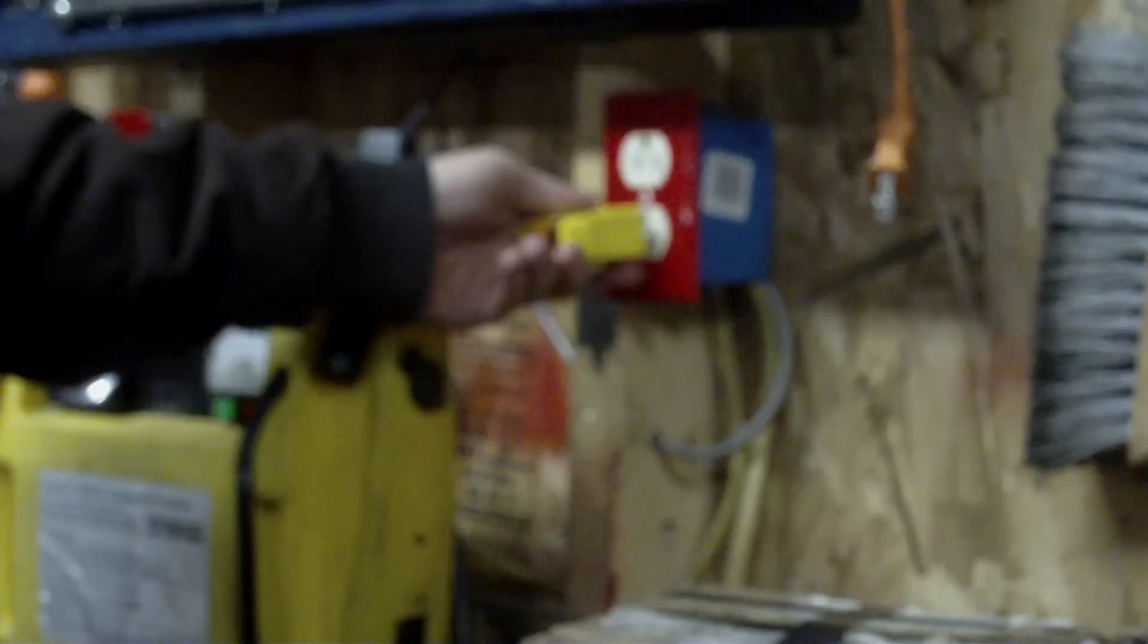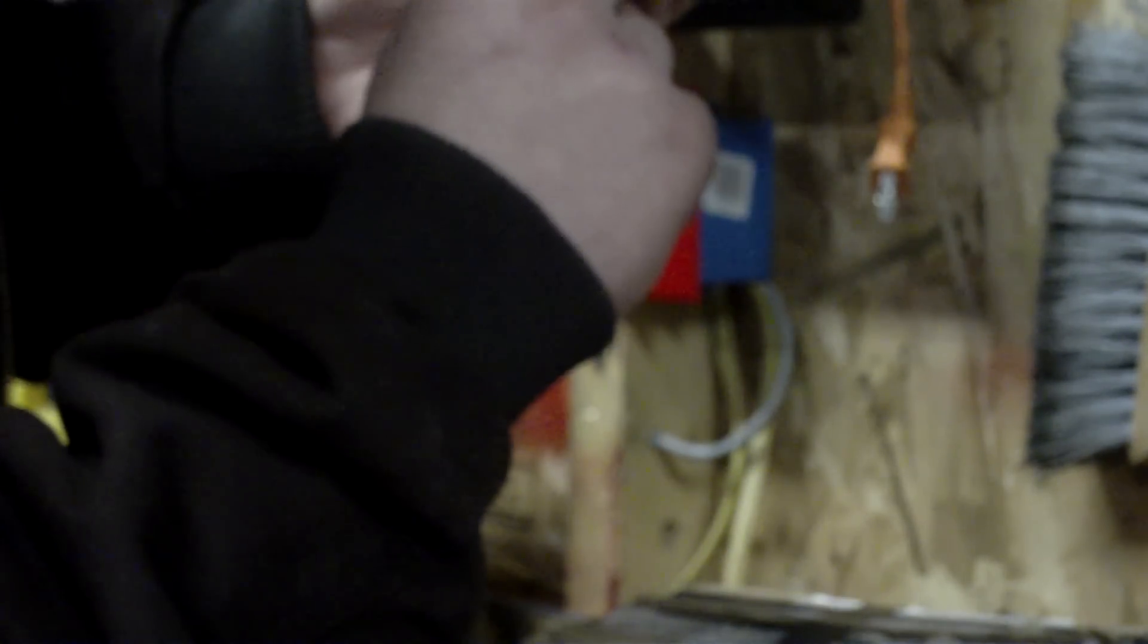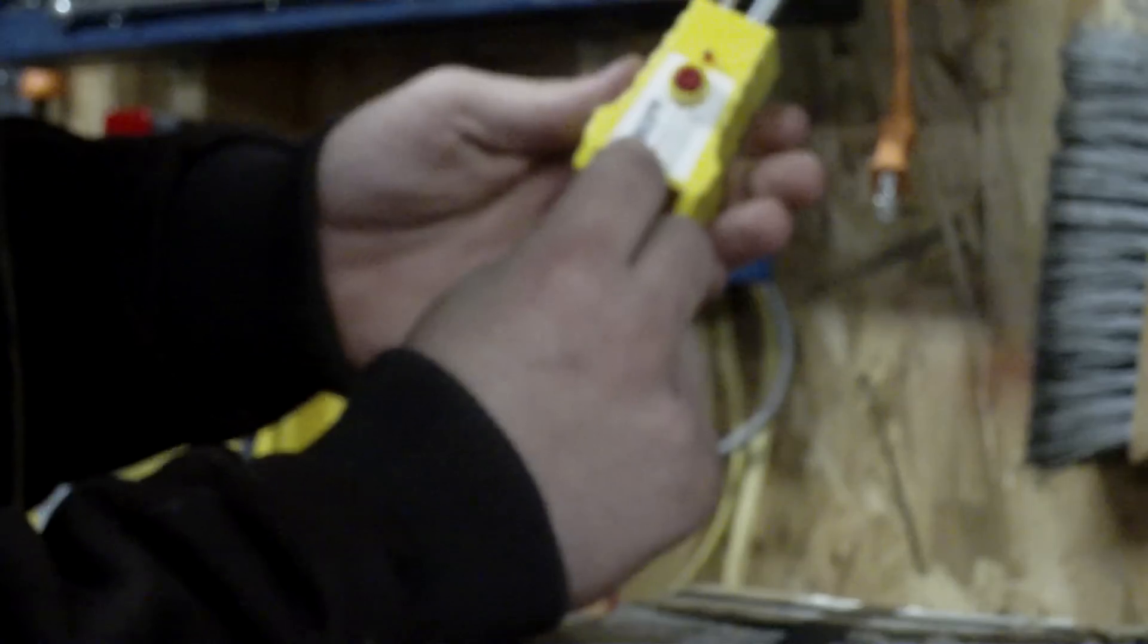Now there's something else. If any electrician or anybody that does any electrical work around the house, get one of these receptacle testers. You plug it in, if these two lights come on, it's wired right. If the red light comes on, you better shut the power off, you either got the hot and the ground reversed, or the hot and the neutral reversed.